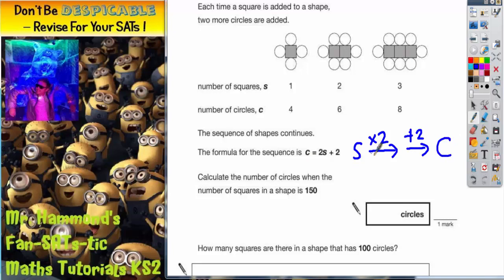So it's the squares, times by two, add two, gives you the number of circles. It then says calculate the number of circles when the number of squares in a shape is 150.